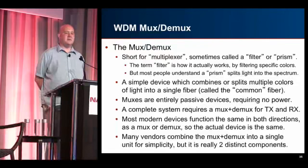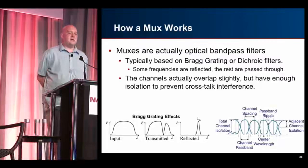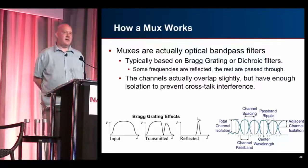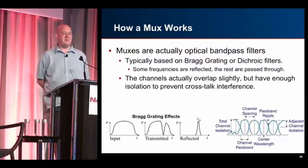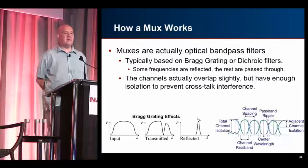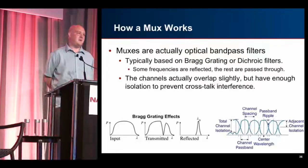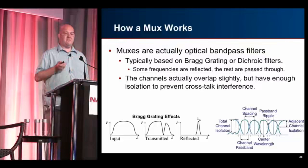How does a mux actually work? It's based on what's called an optical bandpass filter — usually a Bragg grating filter. This reflects certain frequencies and passes the rest through. One specific frequency gets sent in a different direction, and that's used to build the mux — sending one frequency to this port, one frequency to that port. That's basically all you're doing.